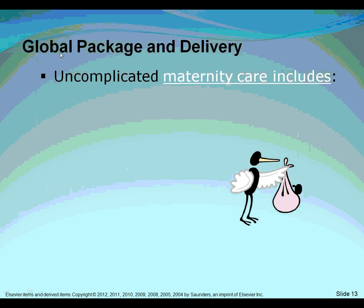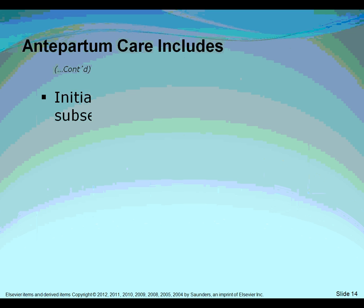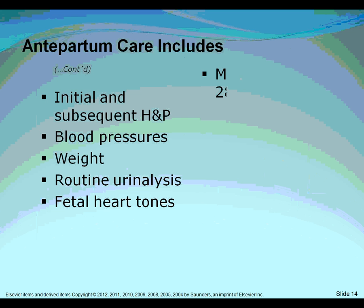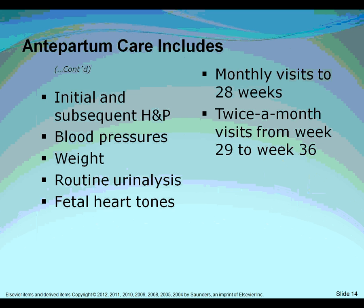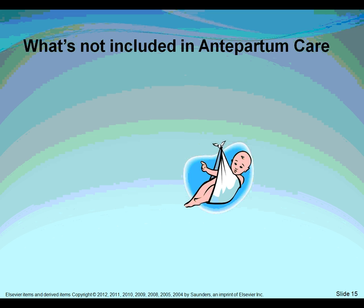The global package means all-inclusive. Uncomplicated maternity care includes antepartum care before delivery, the delivery itself, and postpartum care after delivery. Antepartum care includes initial and subsequent history and physicals, blood pressures, weights, routine urinalysis, fetal heart tones, monthly visits up to 28 weeks, twice-monthly visits from 29 to 36 weeks, and weekly visits from 37 weeks to delivery — everything under the sun related to giving birth in one global rate.